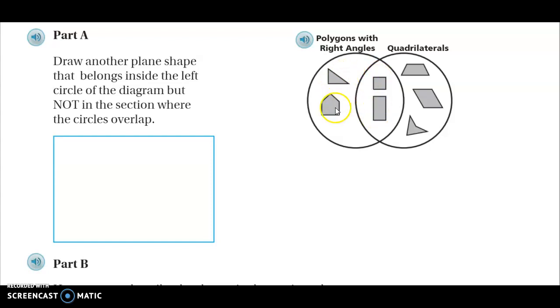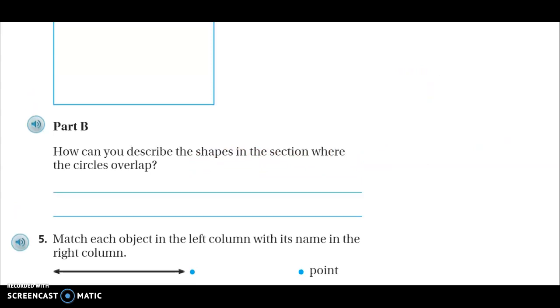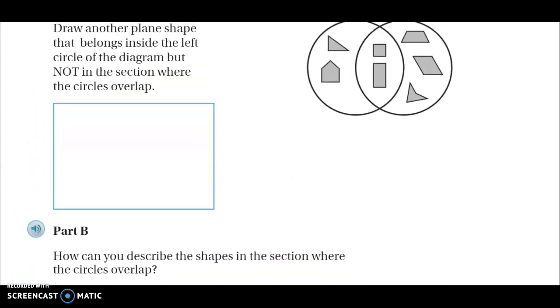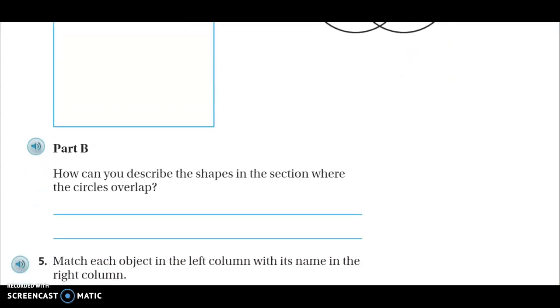Draw another plane shape that belongs inside the left circle but not in the overlap. So any shape that belongs with the polygons with the right angles but does not overlap into this under the right circle. Pause and do that. Part B. How can you describe the shapes in the section where the circles overlap? So how can you describe these shapes? Think about your two titles. Press pause and write me a sentence describing that.